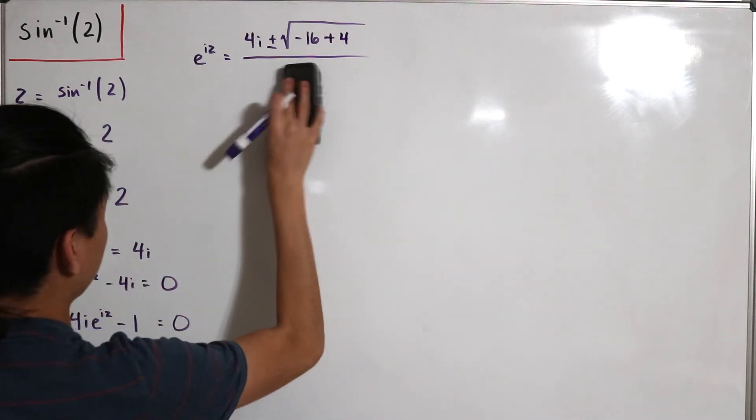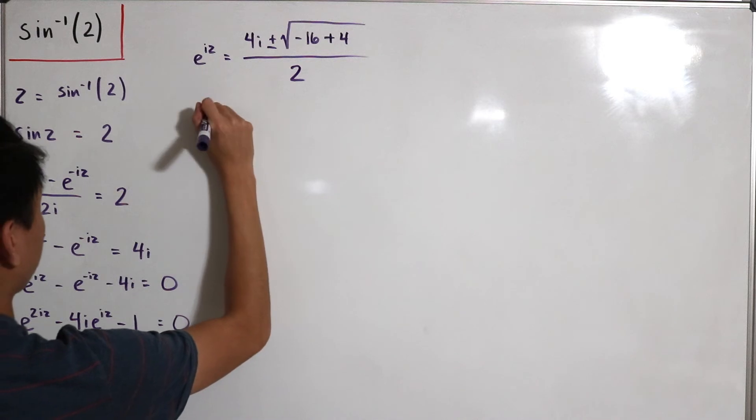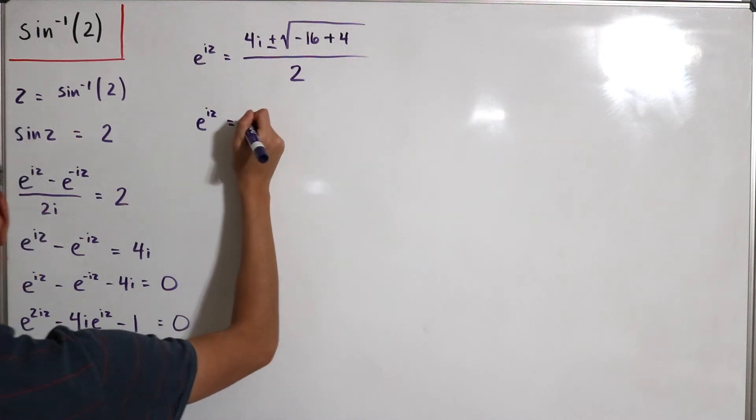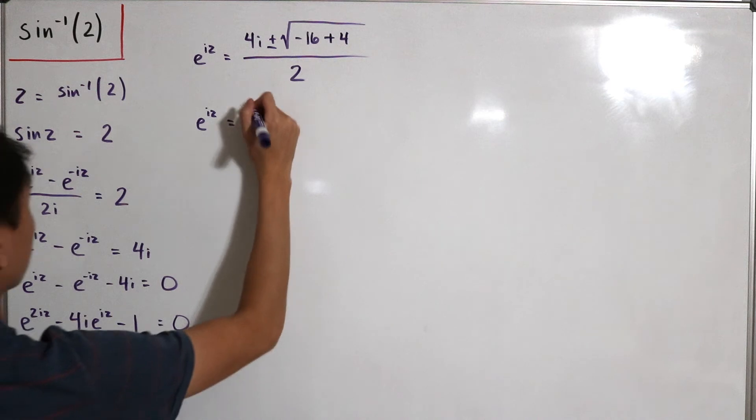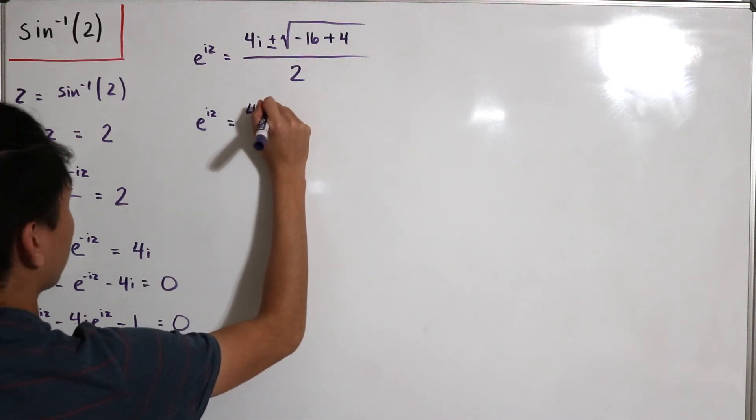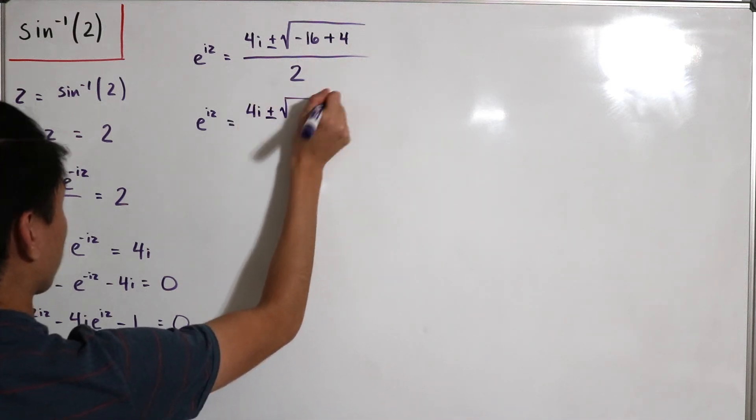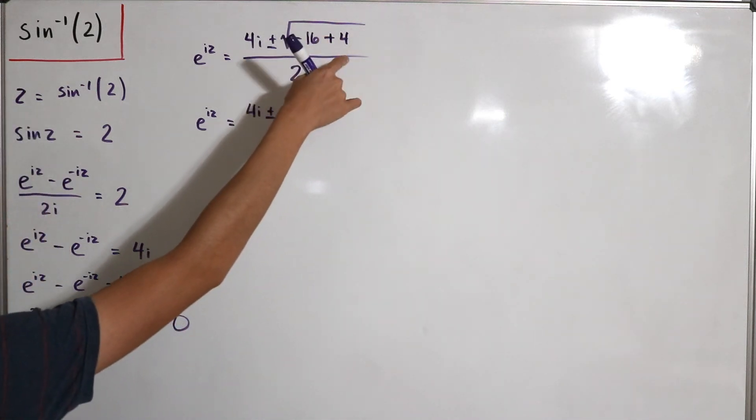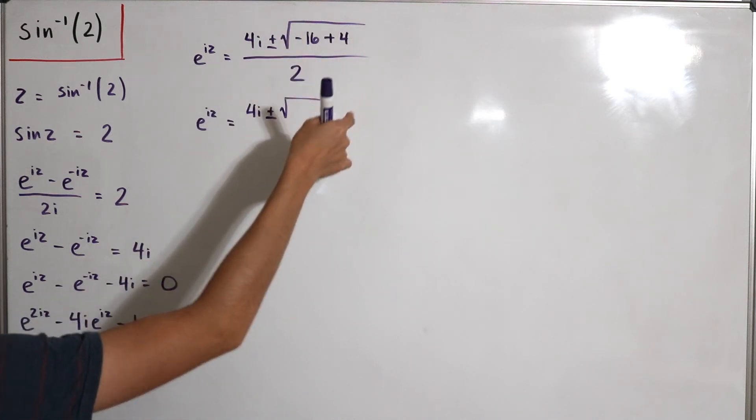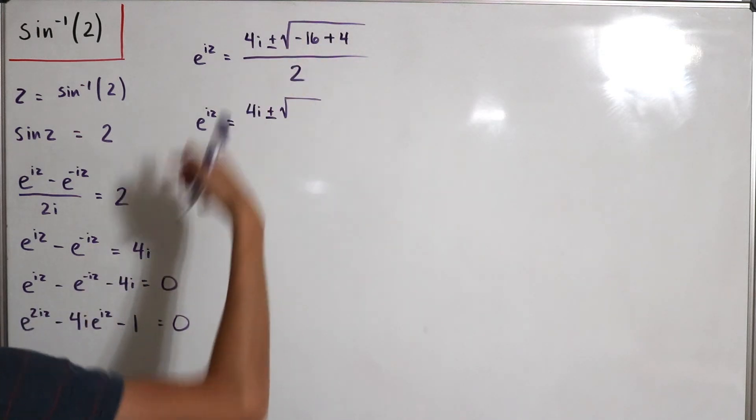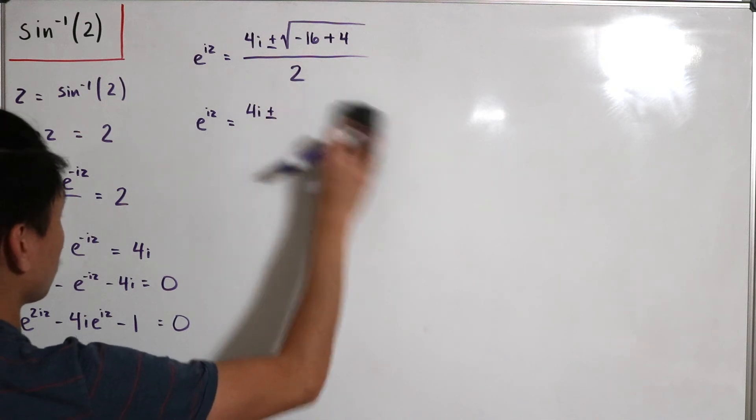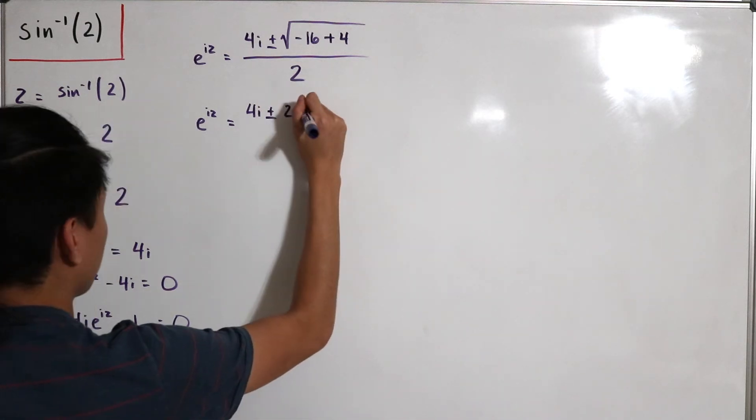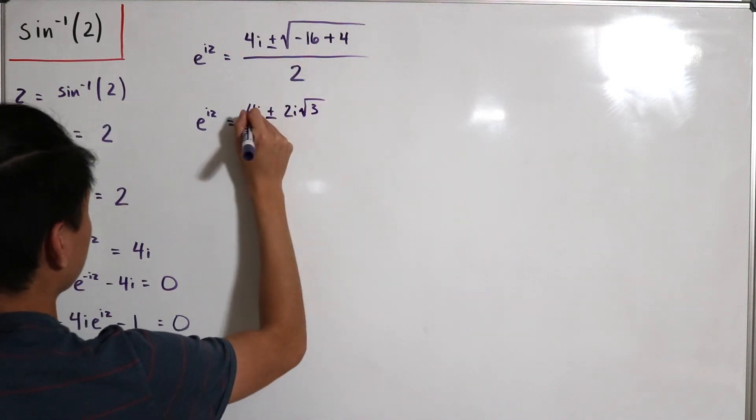Let me fix the centering over here. So then we have e to the power iz, and so that's just equal to, well let's just simplify what's in here: 4i then plus or minus the square root of negative 16 plus 4, that's negative 12. So if I were to solve this, then this will just become 2 times i and then multiply by the square root of 3 and then divide it by 2.